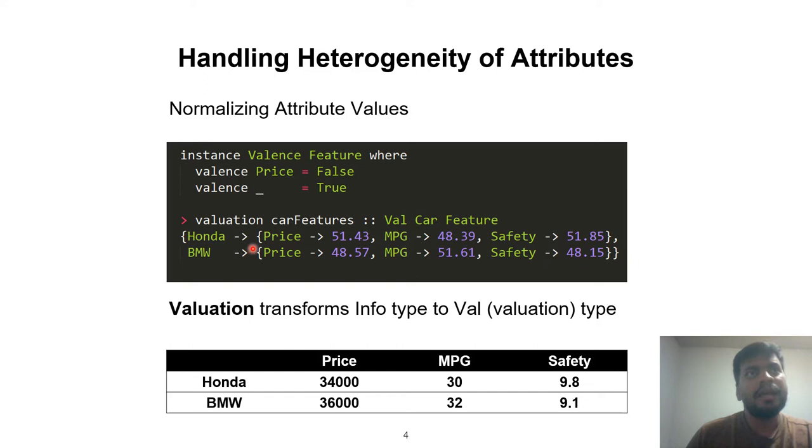In order to compare these numbers, we want to convert all these attribute values to common units. This process of converting different attribute values in different units to a uniform range that can be compared is called normalization. Valuation is the function that implements normalization in MADMAX. This is what my normalized attribute values for Honda and BMW look like. All these values lie between zero and a hundred.